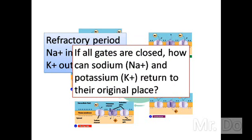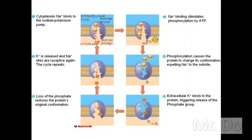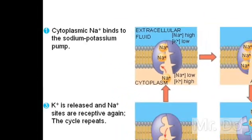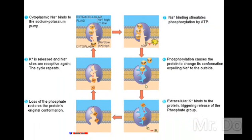So now all the gates are closed, we have to push them against the gradient. We're going to use what is called a sodium-potassium pump. The sodium-potassium pump is an active transport that uses ATP to push all the sodium back out, and all the potassium back inside.